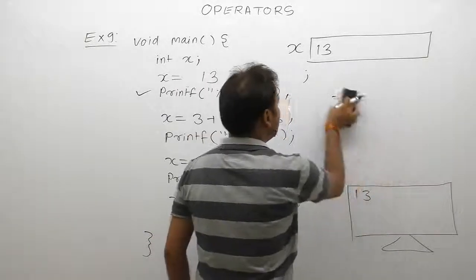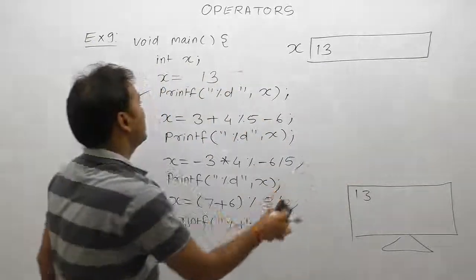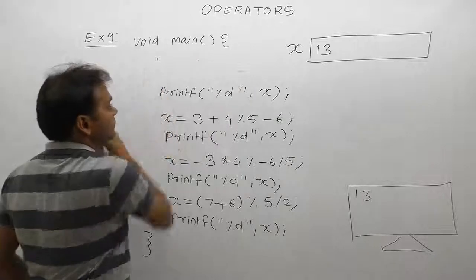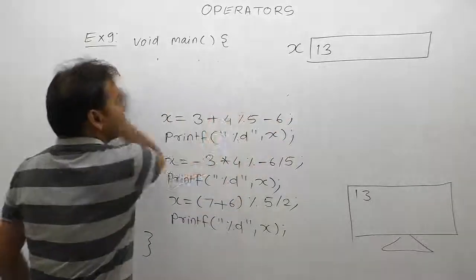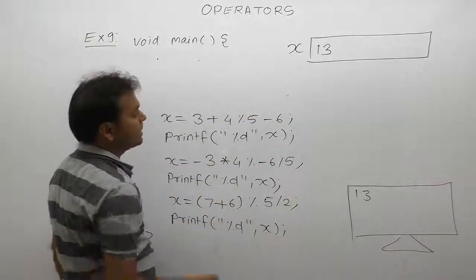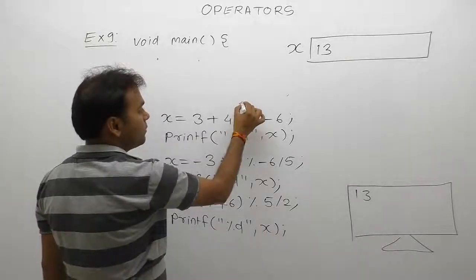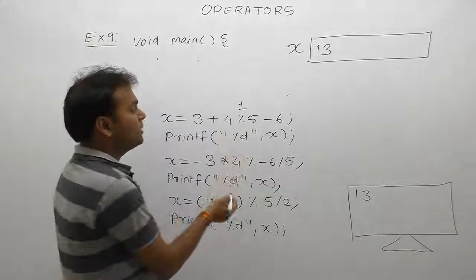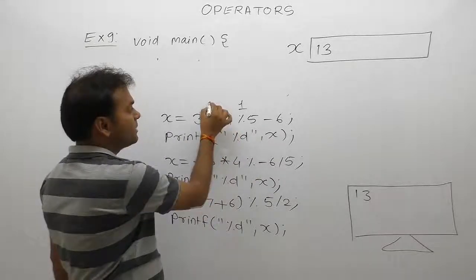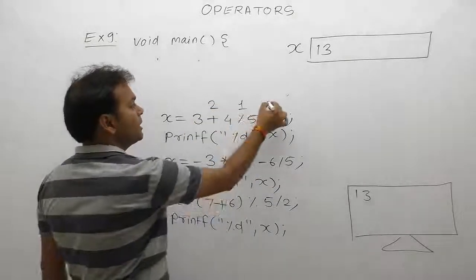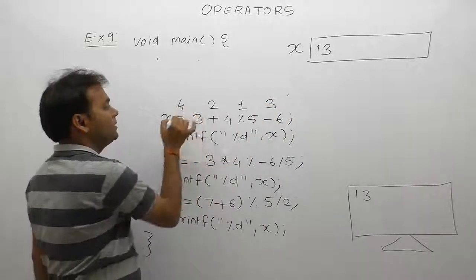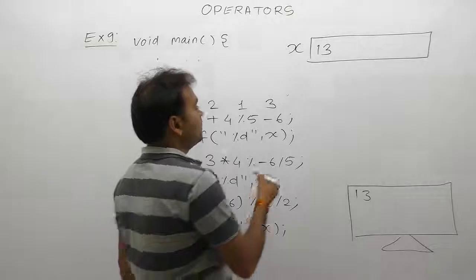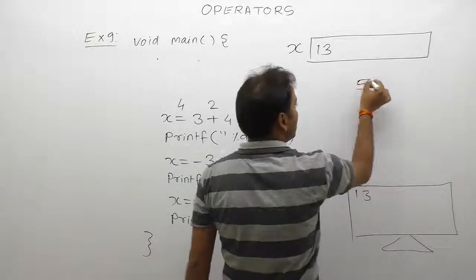Next case, in the second expression, highest priority is modulo, then plus or minus priority according to associativity rule. First chance goes to plus, then minus, then assignment. First, the modulo case: 4 modulo by 5.